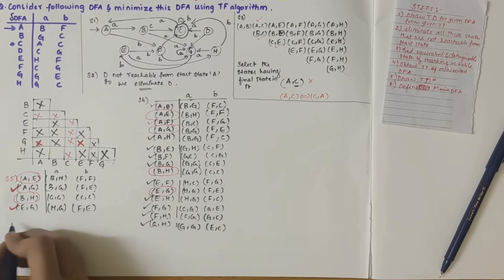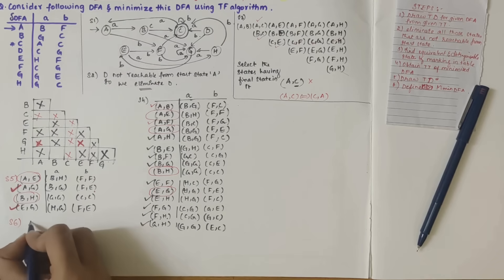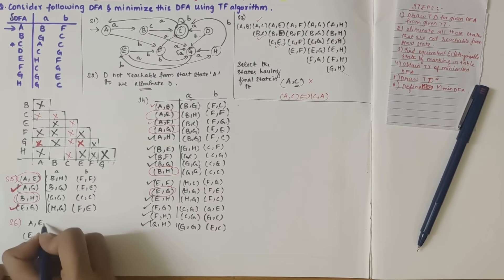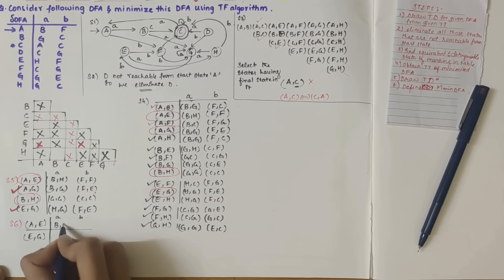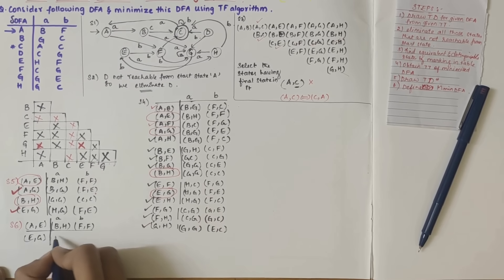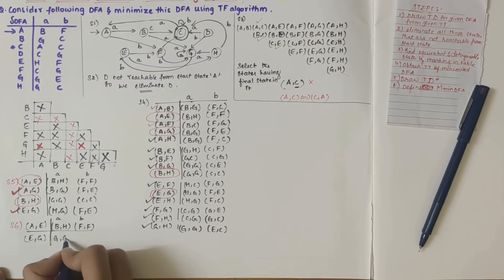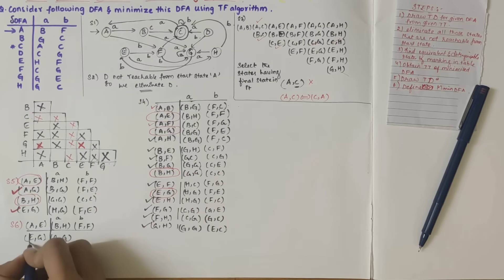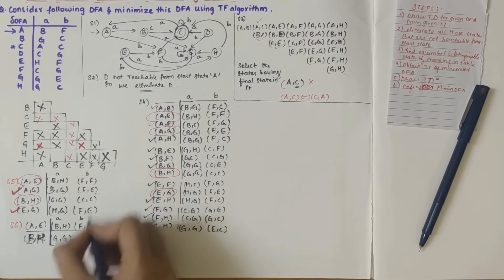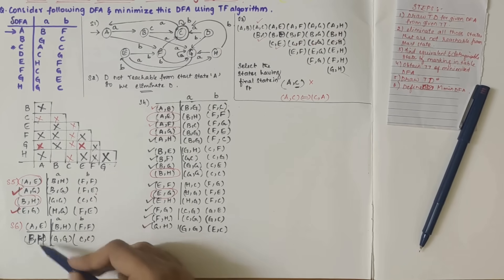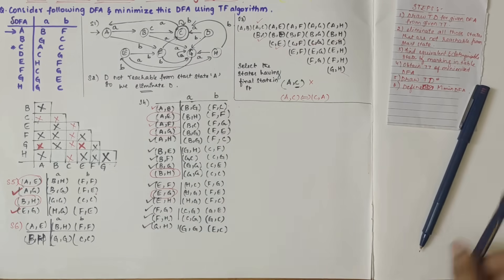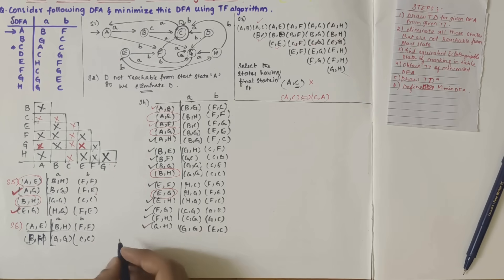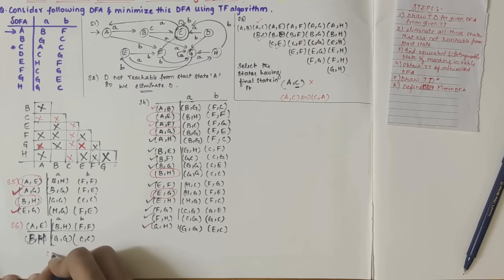In step six, we write down the remaining entries: a-e and b-h. For a-e: results are b-h and f-f, and for b-h: results are g-g and c-c. None of b-h, f-f, g-g, or c-c are available in the table as marked pairs. Since these states can't be reduced further, we write them down in the transition table as equivalent state groups.